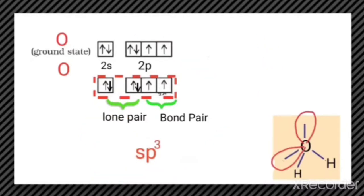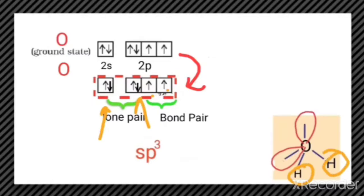The atomic orbitals combine to form four sp3 hybrid orbitals as shown here. Two of these hybrid orbitals have paired electrons — these are actually lone pairs — and two hybrid orbitals have a single electron. These two orbitals overlap with the 1s orbital of a hydrogen atom, resulting in the formation of sigma bonds. So in the molecule there is formation of sigma bonds.